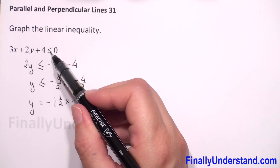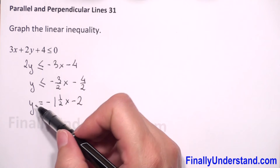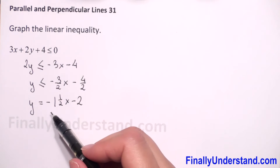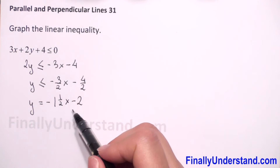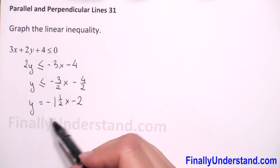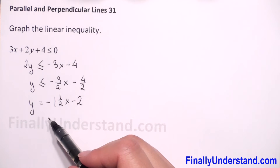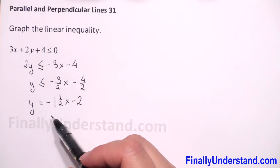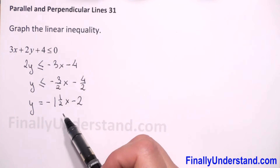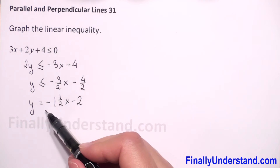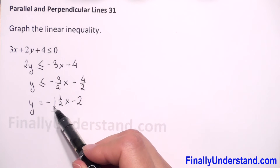Next, because we have the symbol less than or equals, it means that the line y equals negative 1 and one half x minus 2 belongs to our solution, so we will draw a straight line. Because this is a linear function, the graph is a straight line. The coefficient before x is negative, so it means our function is going down.